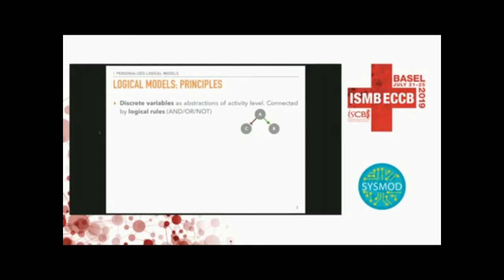So what is a logical model? Very briefly, in a logical model you have discrete variables as abstractions of activity level. In this toy model, you have A, B, C — biological entities, either gene or protein. Each variable is discrete: either zero, inactive, or one, active. That's logical modeling, or Boolean modeling.